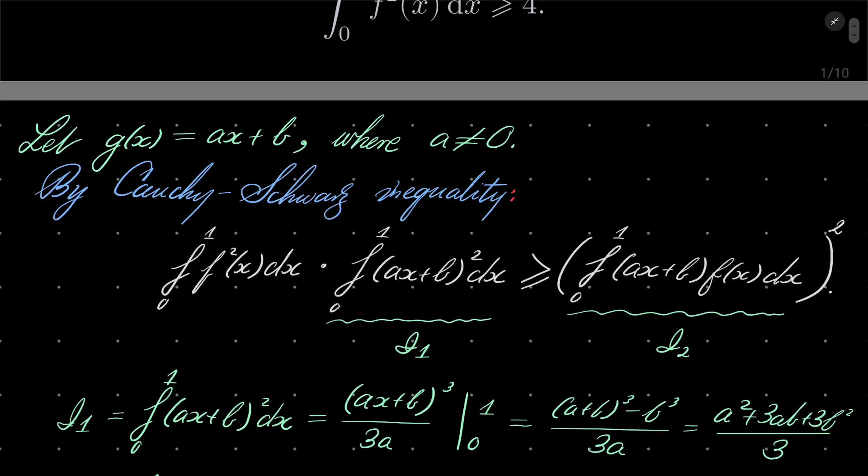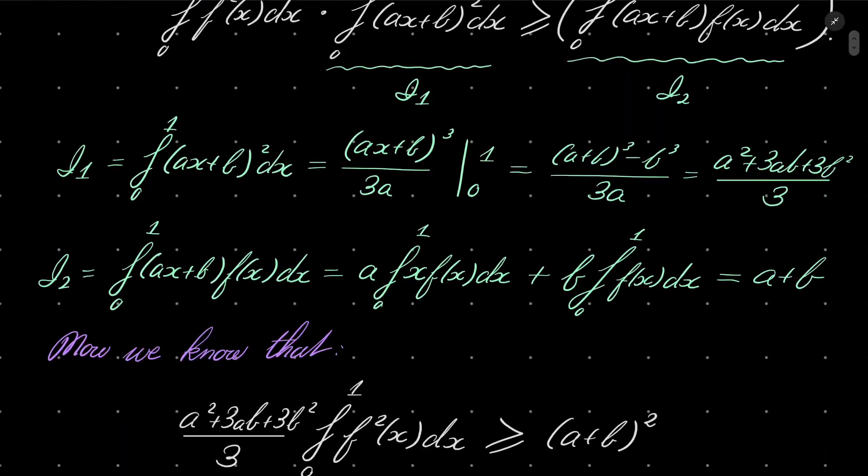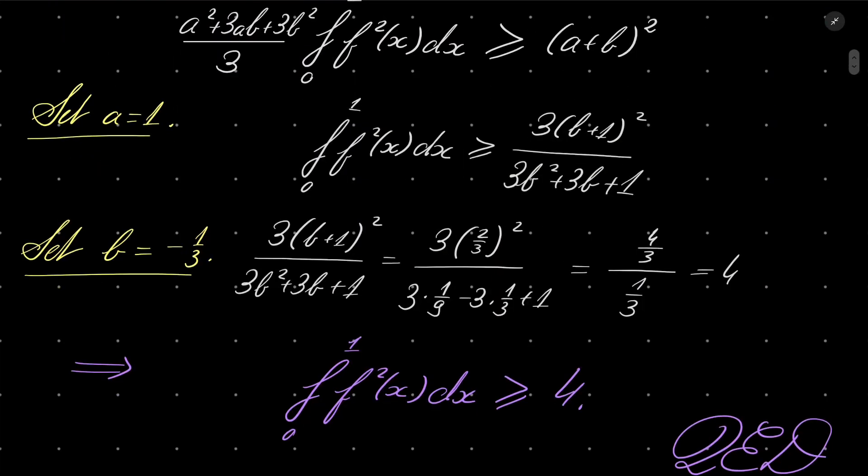Setting suitable parameters, constants a and b, is also very important. I did it by guessing, but as I said, a can be set to 1 without losing anything. And then, you can always set this number to be 4 and just solve a quadratic equation. You will get b equals minus 1 third as a solution.